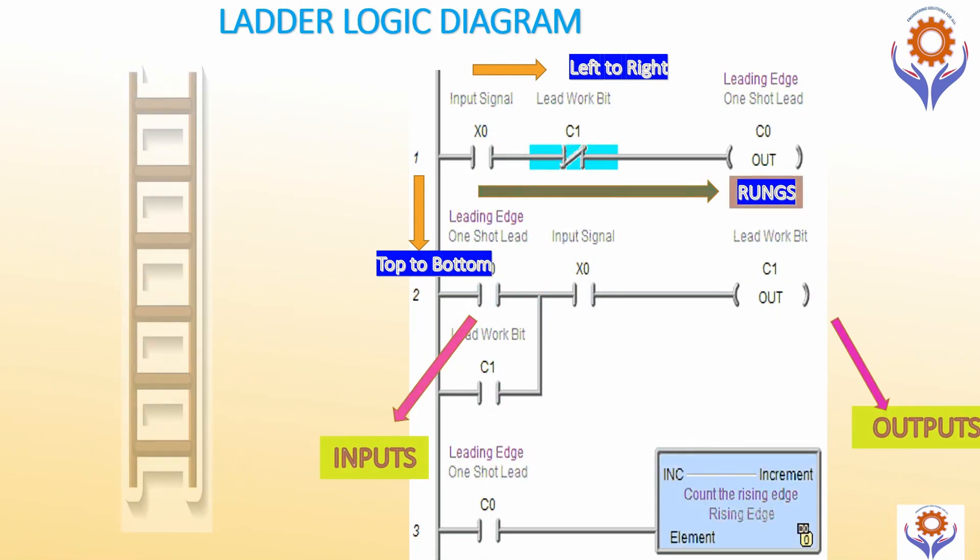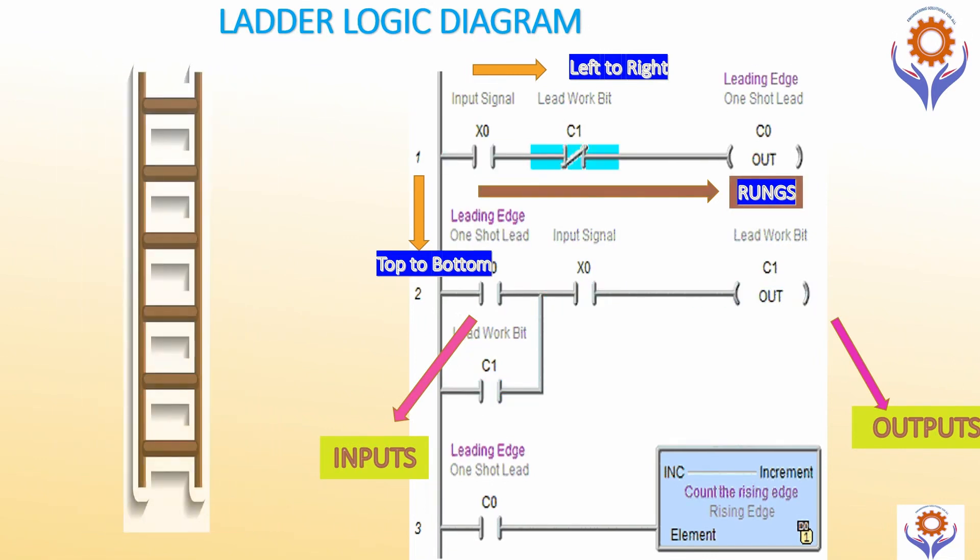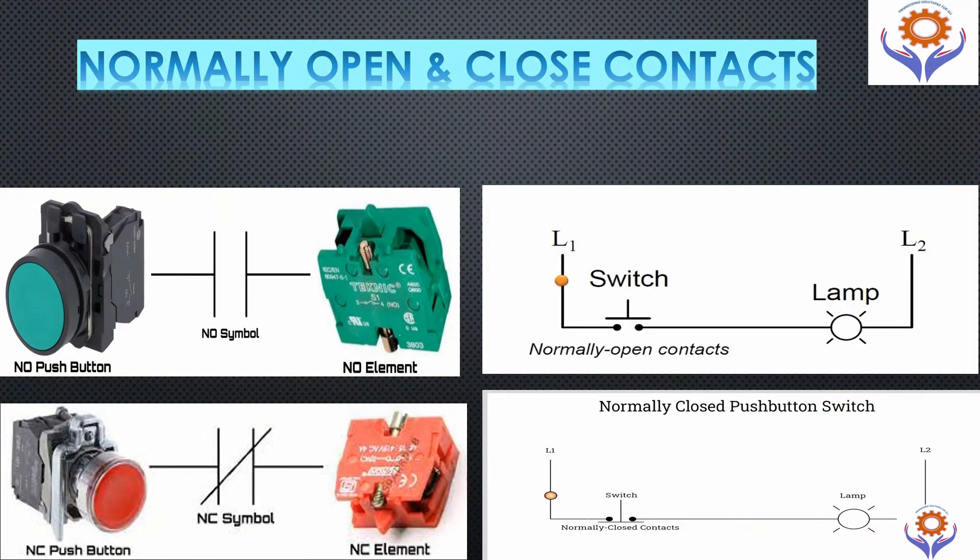Each correspondence lines are called rungs. Let us start with the ladder logic basics which is normally open and normally closed contacts. The digital input be mapped with the logical input. The signals from the field can be taken either normally open or normally closed signals.